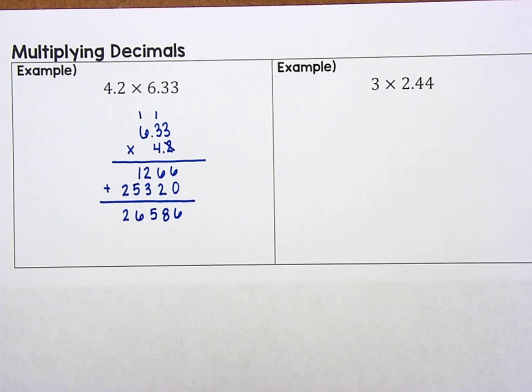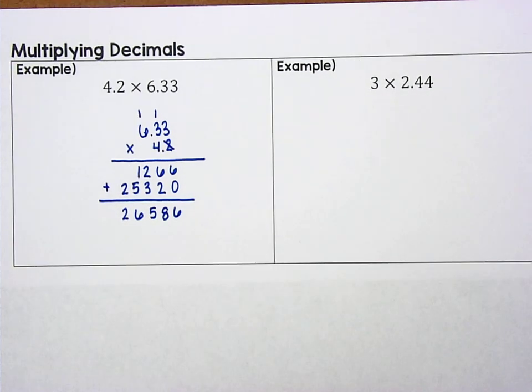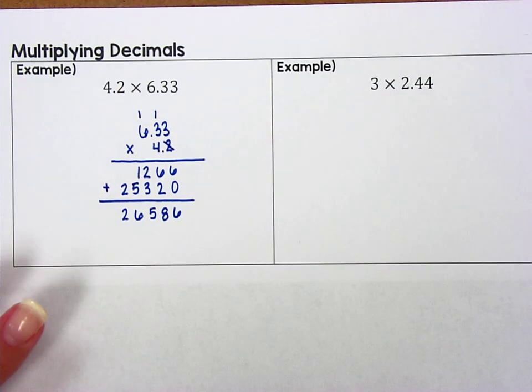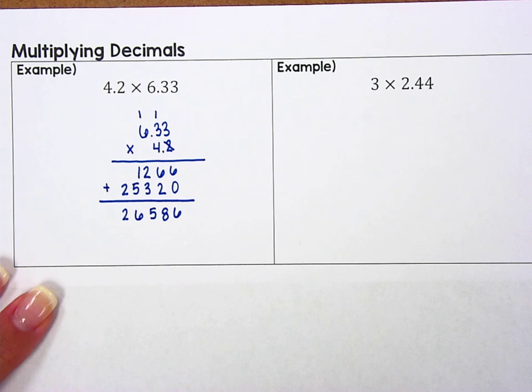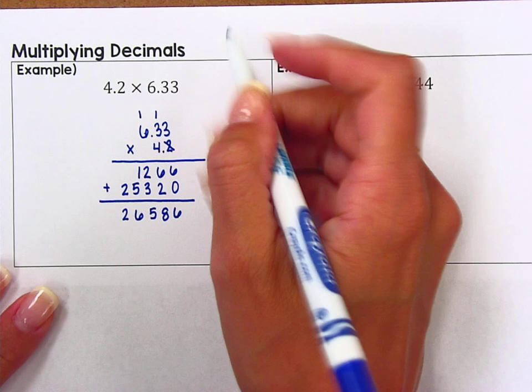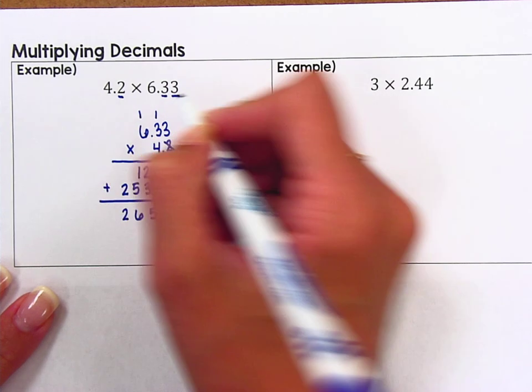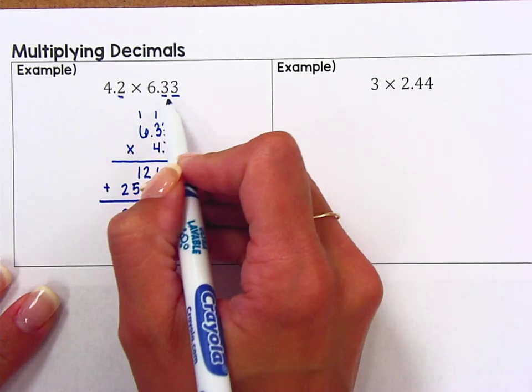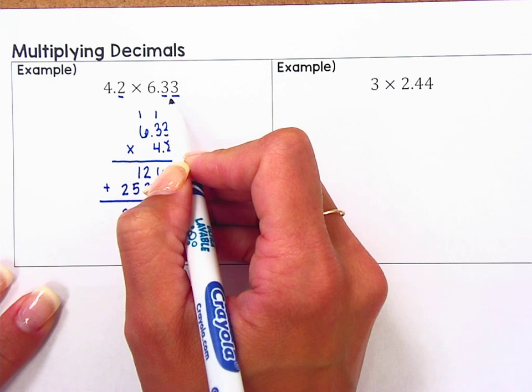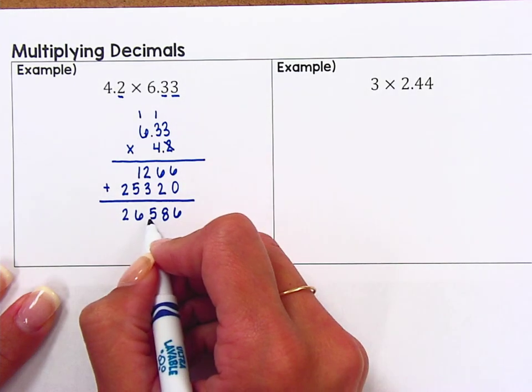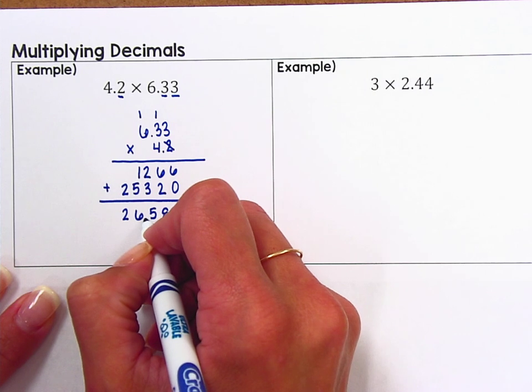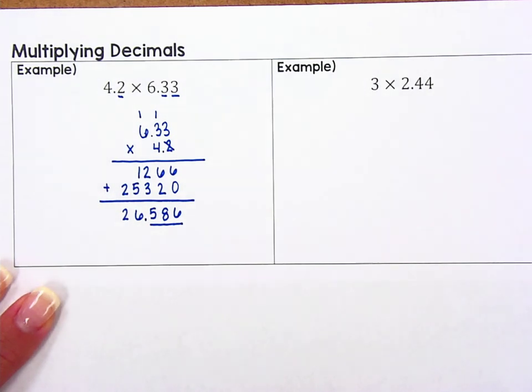Now comes the challenge of placing the decimal point where it belongs and there's two ways that we can look at it and we're going to look at both of them. The first method is you can count the number of digits after the decimal point in our original problem. So we have one number after the decimal point, two, three. If there are three numbers after the decimal point in our original problem, that means there need to be three numbers after the decimal point in our answer. So that would mean our answer would be 26.586.